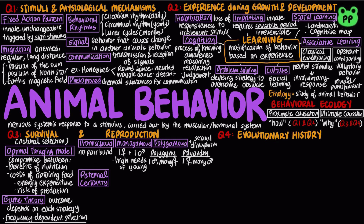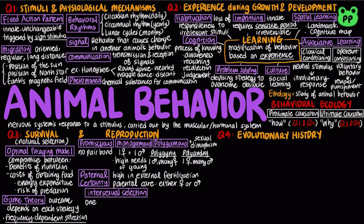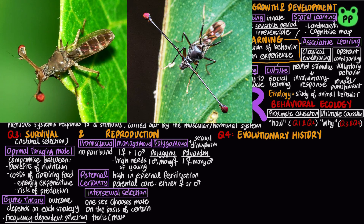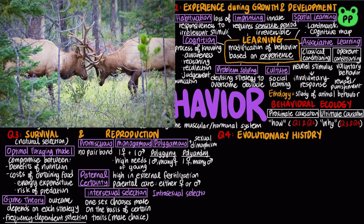The certainty of paternity influences parental care and mating behavior. Paternal certainty is relatively low in species with internal fertilization, because mating and birth are separated over time, whereas it is much higher in external fertilization. In species with external fertilization, parental care is at least as likely to be by males as by females. In intersexual selection, also known as mate choice, members of one sex choose mates on the basis of certain traits — for example, female stalk-eyed flies choose males with relatively long eyestalks. Intrasexual selection involves competition between members of the same sex for mates, which often involves agonistic behavior — a ritualized contest that determines which competitor gains access to a resource.